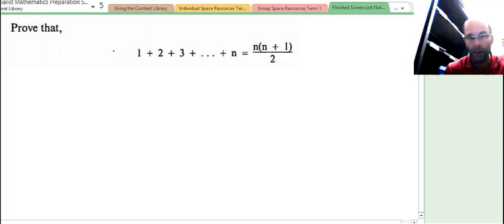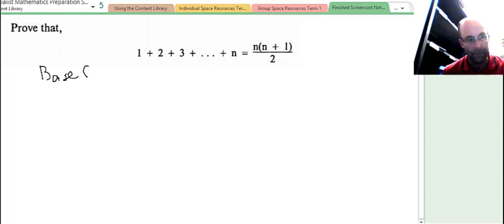We've got the base case first up. The domino analogy is that we have to show that first domino falls. Base case where n equals 1. So on the left hand side we can see that string, well n is the number of terms and in the base case n equals 1. So we only have the 1 term, so left hand side simply equals 1. It'll just be that first term, that 1 there.